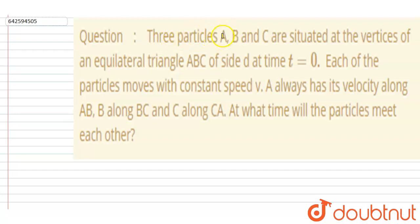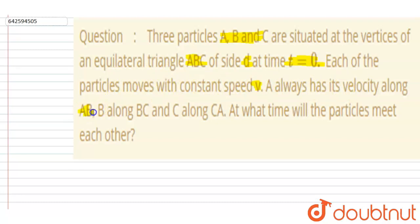The question says that three particles A, B and C are situated at the vertices of an equilateral triangle ABC of side d at time t equals zero. Each particle moves with constant speed v. A always has its velocity along AB, B along BC, and C along CA. At what time will the particles meet each other?